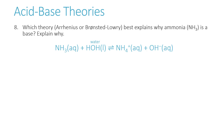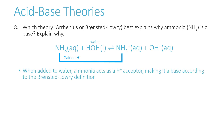Which theory best explains why ammonia is a base? When ammonia is added to water, NH3 acts as a base by grabbing a hydrogen from water, forming ammonium ion NH4⁺ and hydroxide ion OH⁻. So when added to water, ammonia acts as a hydrogen ion acceptor, making it a base according to the Bronsted-Lowry definition.